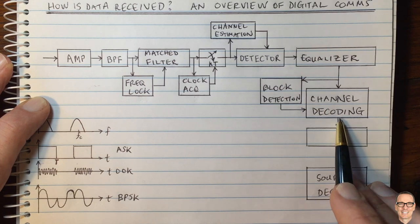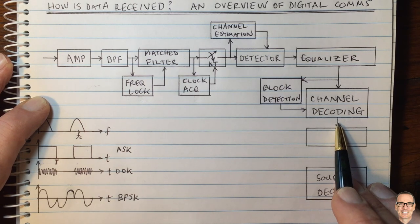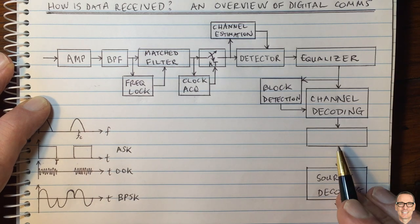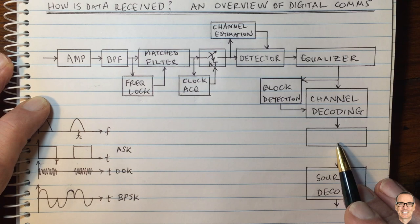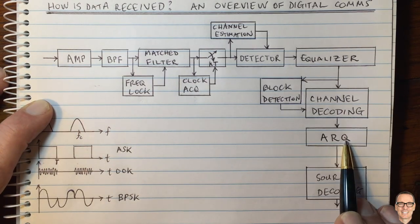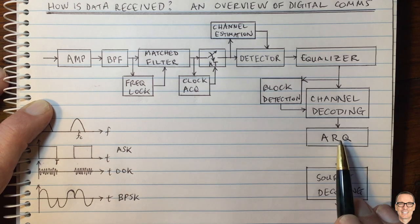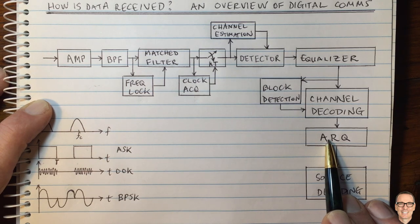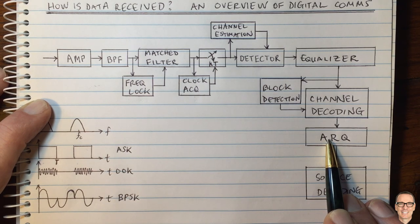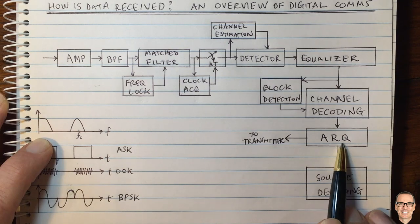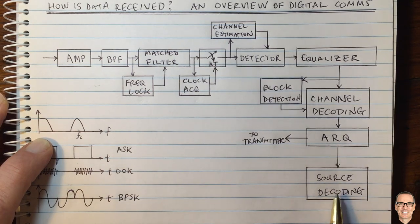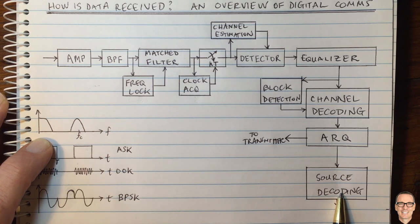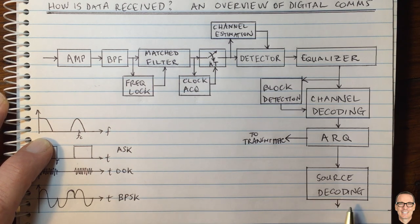After channel decoding, in theory we should have our error-free sequence. But things are never ideal. We often have another process called auto-repeat request (ARQ). This has its own parity, generally over a longer block length. If that's not met, it requests an entire retransmission from the transmitter. It has a feedback path so it can tell the transmitter to retransmit. If the ARQ is happy, it sends the data to the source decoder, which does decompression or conversion back to the original signal.